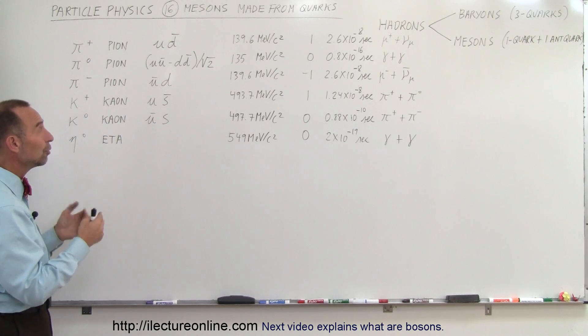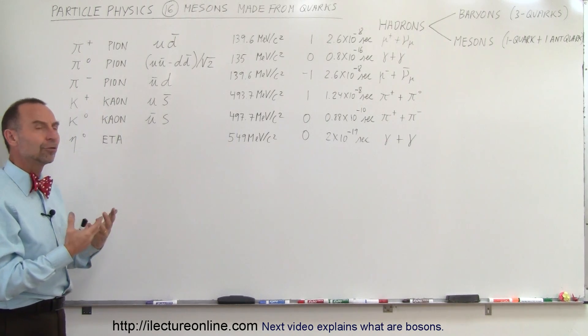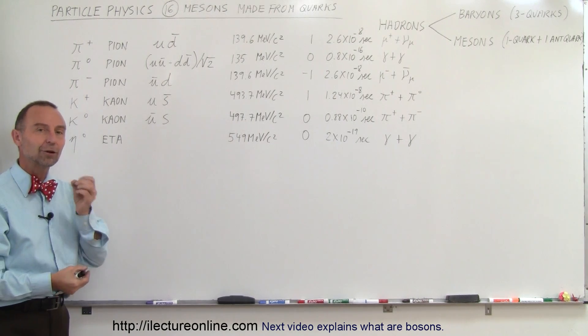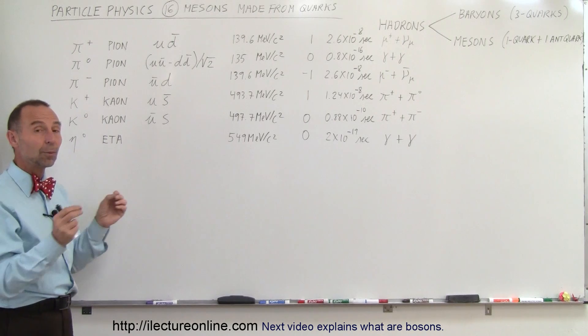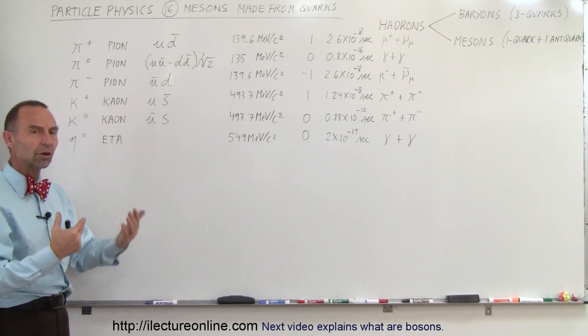So that gives you kind of an overview of what mesons are and how they're made out of quarks. And again, the universe was not meant to maintain these particles for a very long period of time. They're only meant to be there for a very short period of time. And some of them are what we call exchange particles that carry the nucleus strong force between, like the neutrons and the protons.